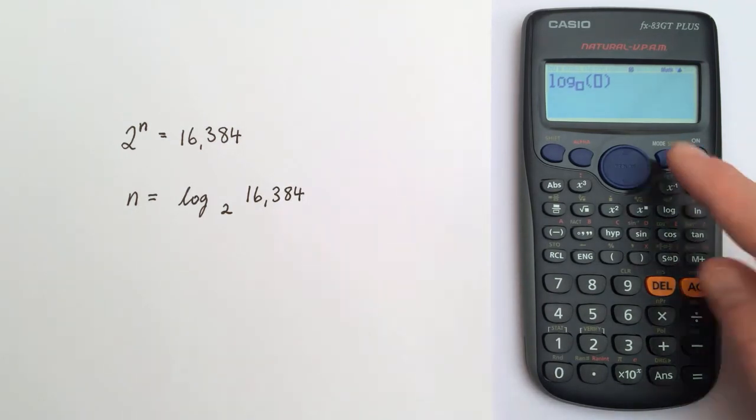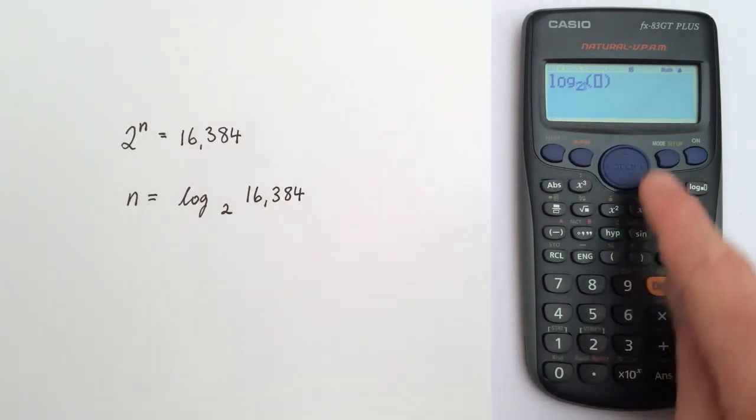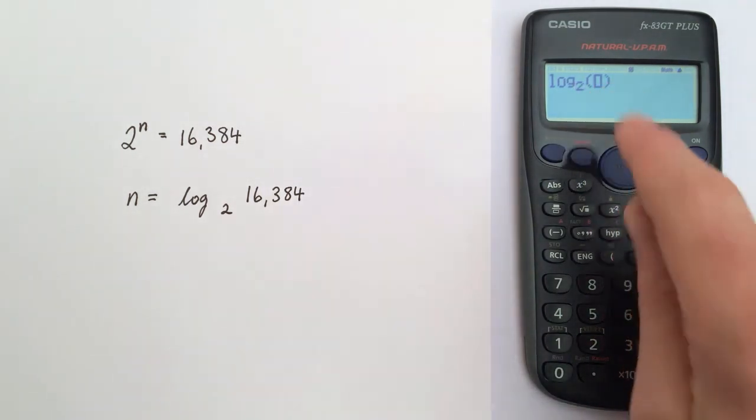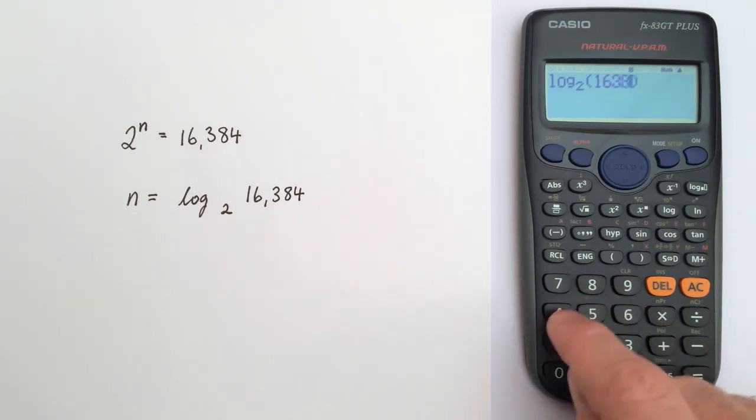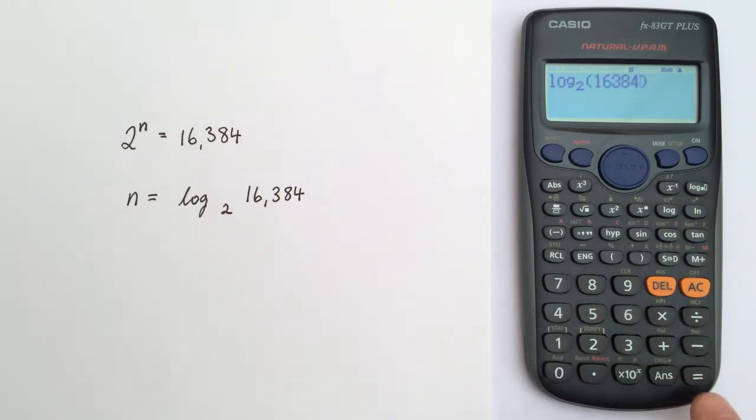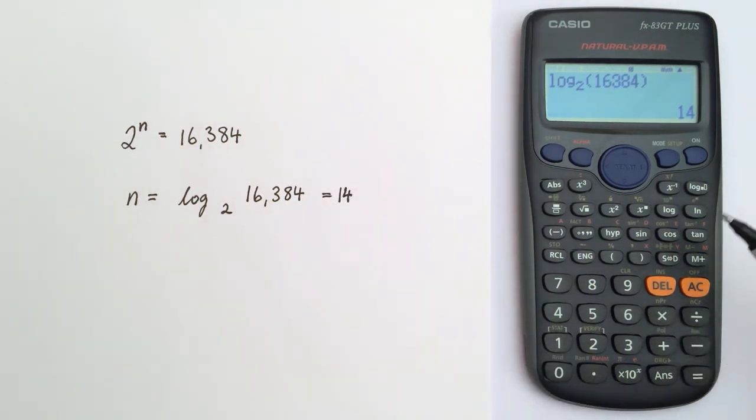It is very easy to get the answer to this using this function. So I want my base to be 2, so I type in 2. I'm going to use the arrow key so I can write in the number 16,384. Now when I'm happy, I press equals and I can see the answer is 14.